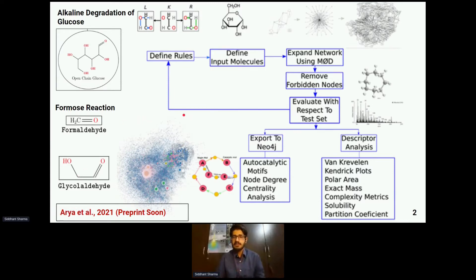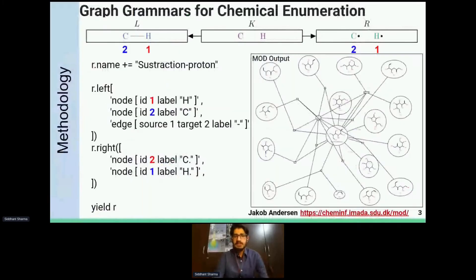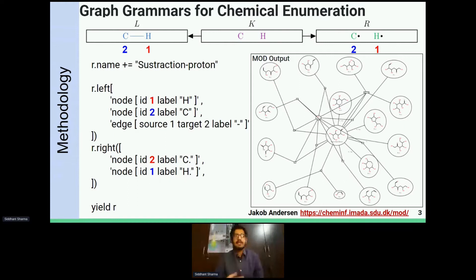Using graph grammar theories, we expanded this network. This work is going to be released as a preprint very soon. We used a graph grammar-based package through our collaborator Jacob Andersen from Southern Denmark University. Other people use reaction mechanism generator, but this was the most efficient way to generate networks faster and less computationally expensive, because we didn't have access to HPCs or clusters and we were undergraduates with limited chemical intuition.